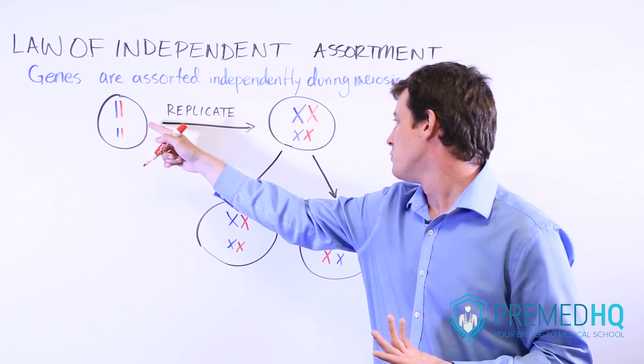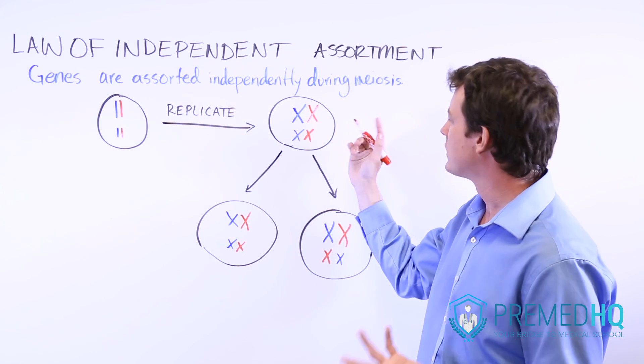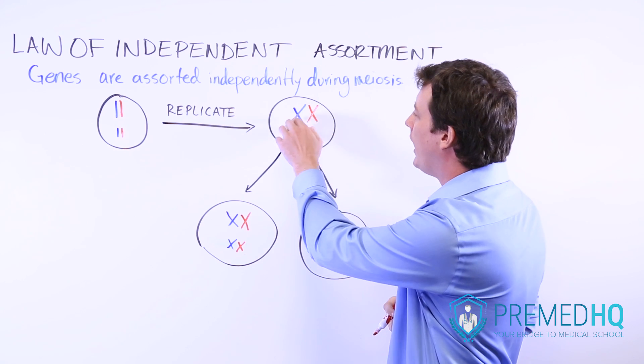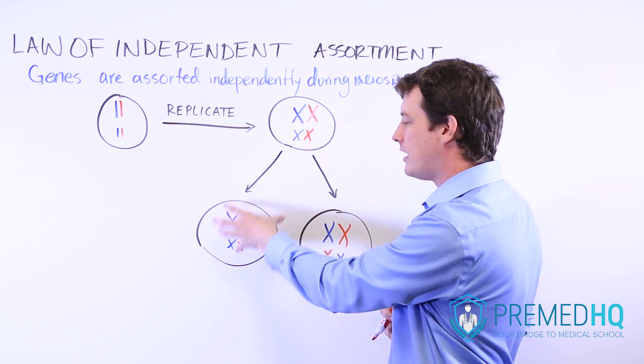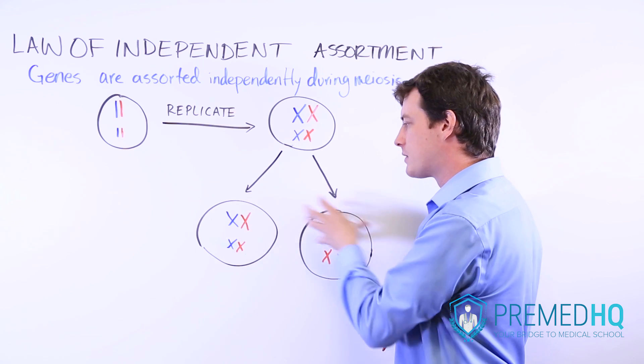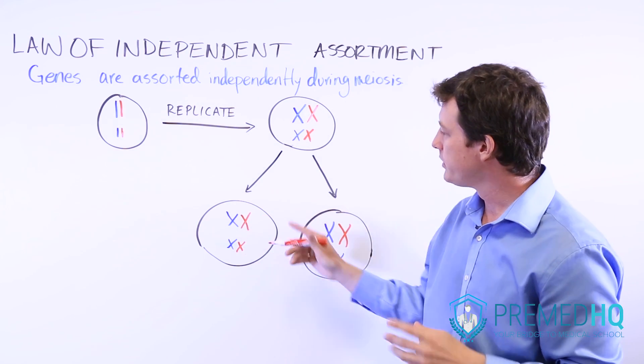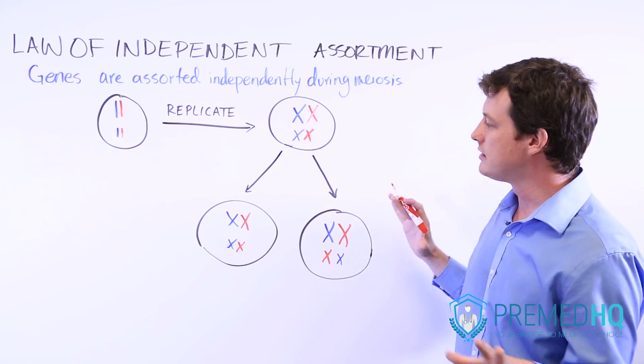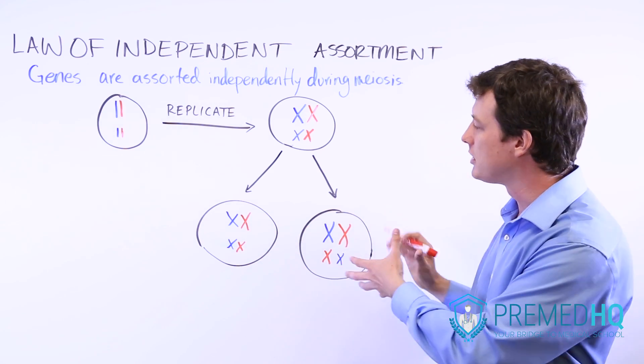But what goes on during meiosis 1 is that they will replicate. And so now we have these two sister chromatids there, and they're still connected with each other. But as they align at the metaphase plate, notice that the red and blue be sort of representing distinct versions of these sisters or of these homologues.